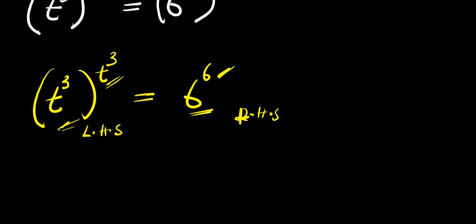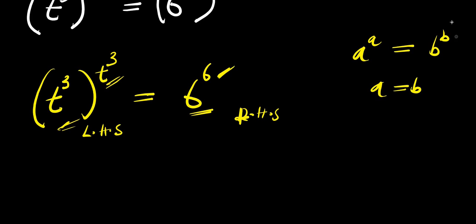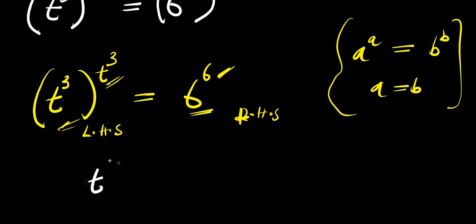Going by this identity: if you have a to the power of a, and this equals b to the power of b, that means a equals b. So that means t to the power of 3 equals 6.